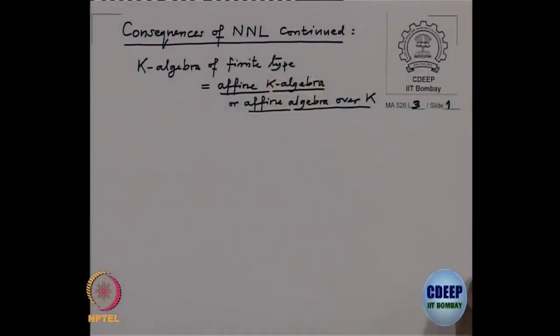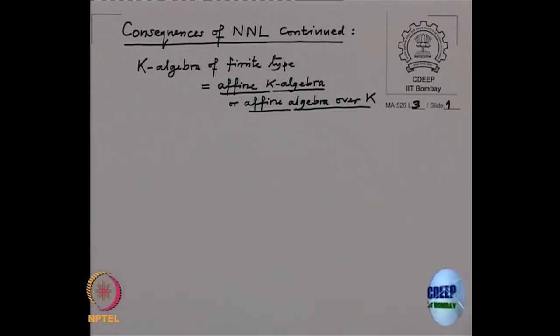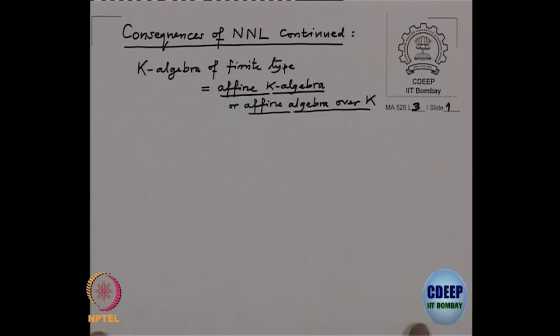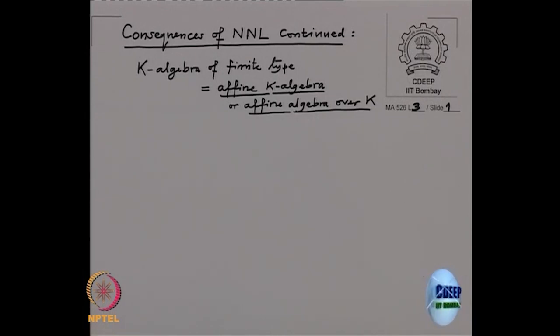Last lecture we have seen the normalization lemma and some of its consequences. Today we will have more consequences of the normalization lemma, and if there is time, we will go to a more refined version of it. As usual, K is a field and we consider K-algebras of finite type, also sometimes called affine K-algebras or affine algebras over K.